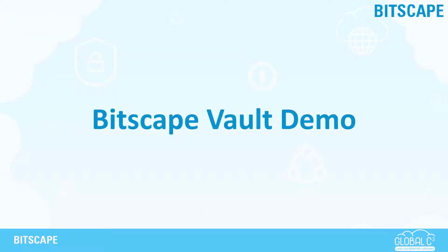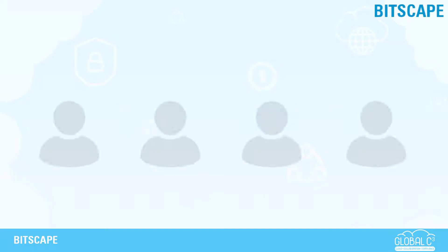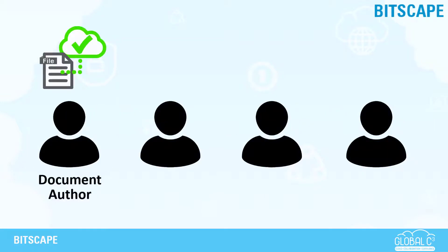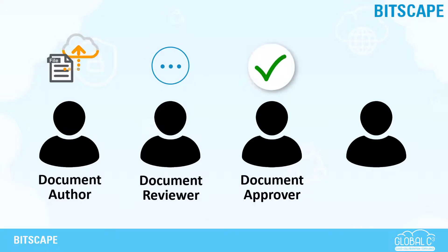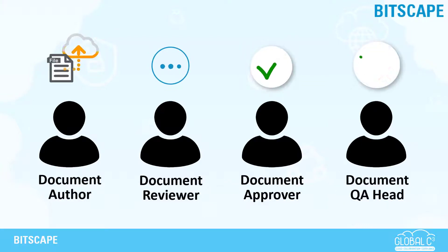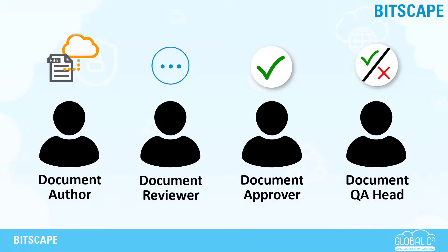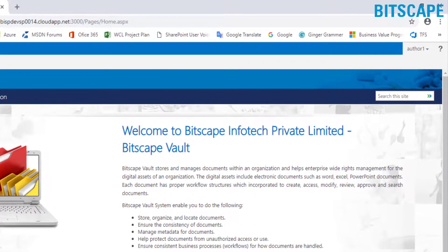Now let us see the demo for Bitscape Vault. Before that, I would like to brief you about the current system flow. In this demo, we have defined a multi-step user approval process. Bitscape Vault enables users to set an auto-approved business process, but to showcase system capabilities, here we will run a manual process. The document author will upload the document and fill the metadata. The document reviewer will review the document, and the document approver will approve the document sent by the document reviewer.